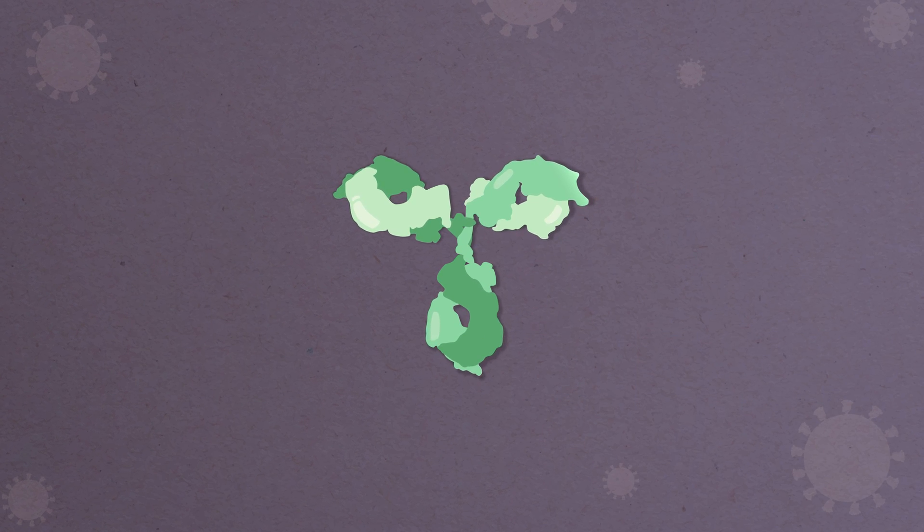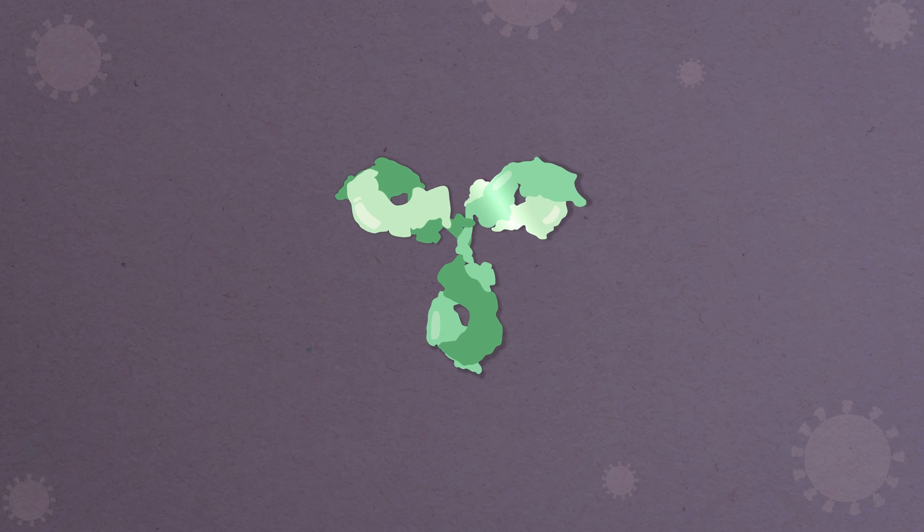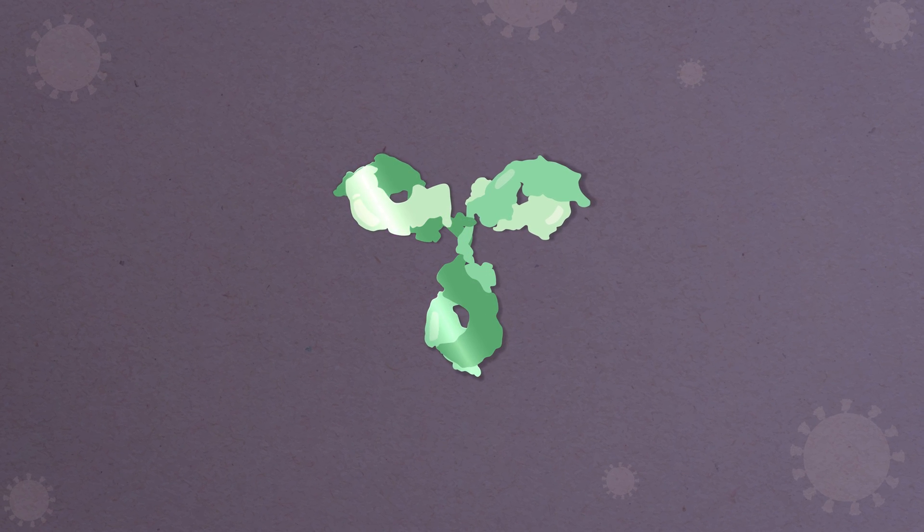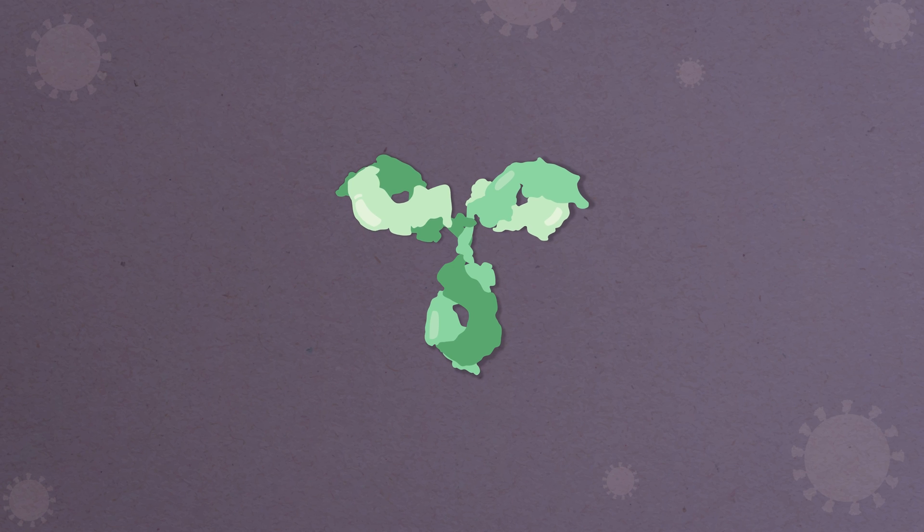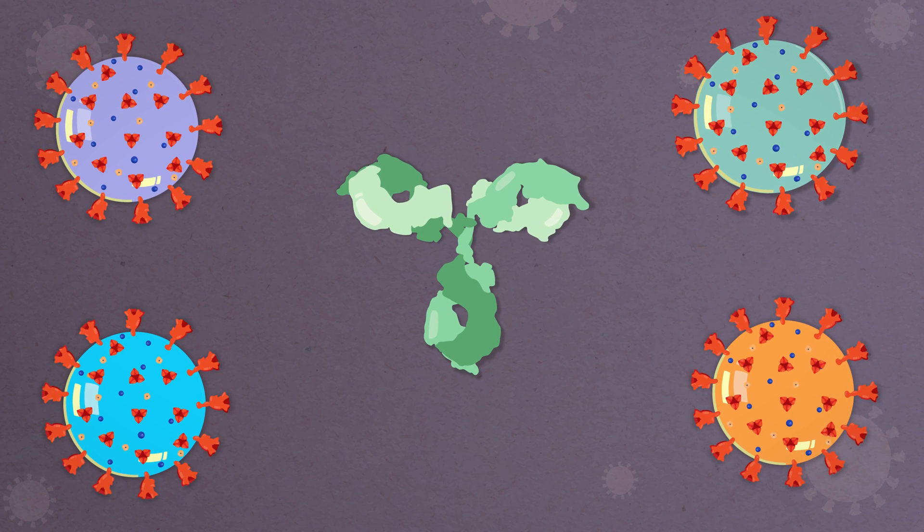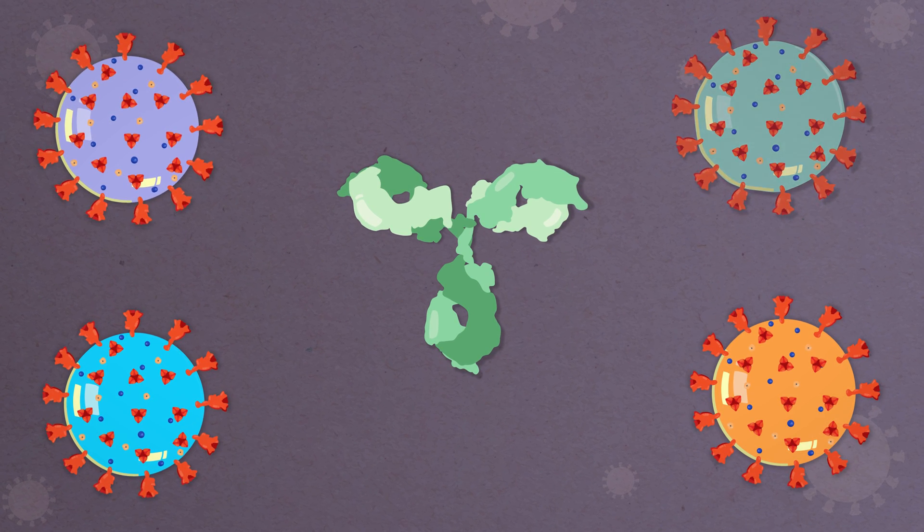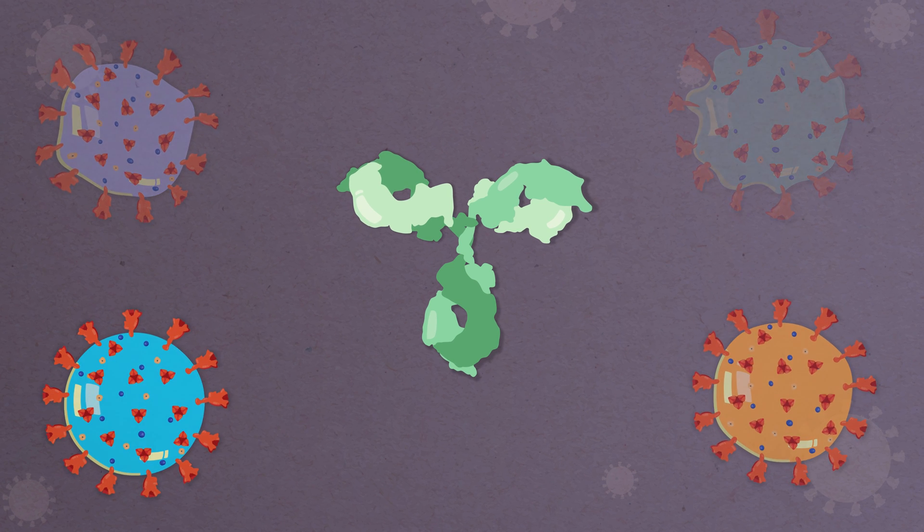The long-term hope is that we might also be able to identify broadly neutralizing antibodies, a special type of antibody that could diffuse not just this specific viral strain, but also offshoots that occur because of natural mutations in the virus over time.